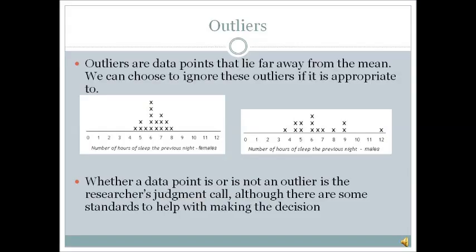Outliers are data points that lie far away from the mean. We can choose to ignore these outliers if it is appropriate to. And as I note here, whether a data point is or is not an outlier is the researcher's judgment call, although there are some standards to help with making the decision. Like if you know the standard deviation, sometimes people will consider a point to be an outlier if it is more than three standard deviations away from the mean. And that is your judgment call then if you want to include it in your data analysis or not.